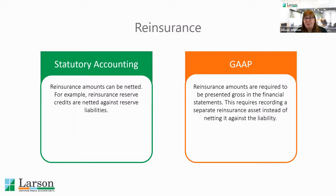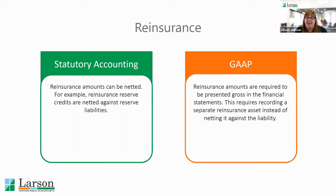For GAAP purposes, everything has to be grossed up, so you wouldn't take a reserve credit. If there were any recoverables or payables, those would all have to be presented at their gross amount. This has the potential to make the balance sheet look a little bit inflated, but that is how it's required to be presented for GAAP.